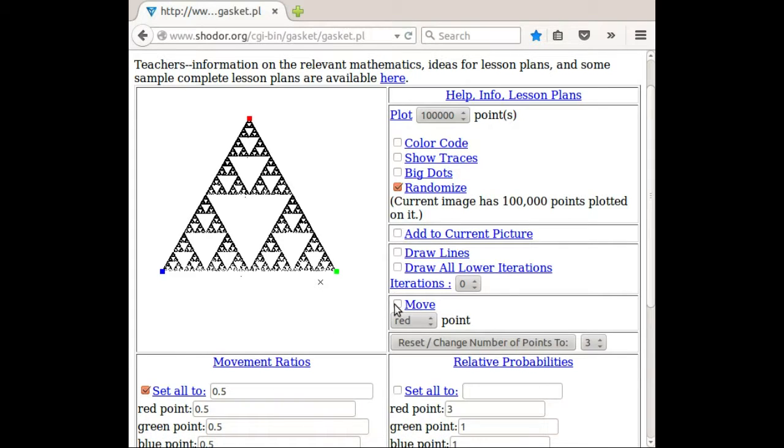Let me show you just one more thing here. You can also move these points around. So let's say I want to move the red point. Then I would click this on move, and then wherever I hit my mouse that's where the red point is going to go.